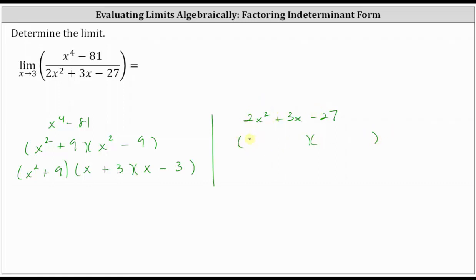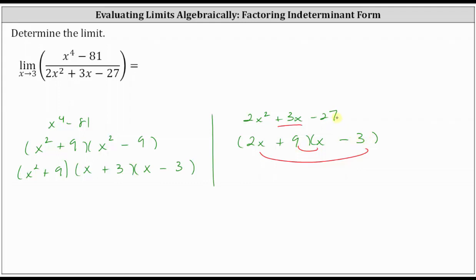The factors of two x squared are two x and x. We'll place the factors of negative 27 in the second positions so that the sum of the inner product and outer product is positive three x. Using trial and error, we place plus nine in the first binomial factor and minus three in the second. Notice nine times negative three is negative 27, and nine x plus negative six x is positive three x.